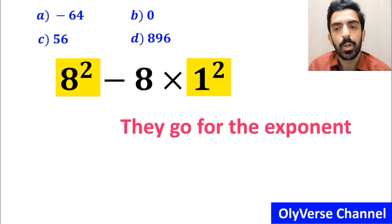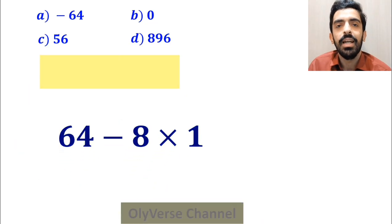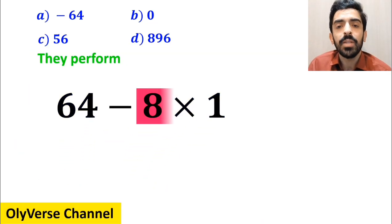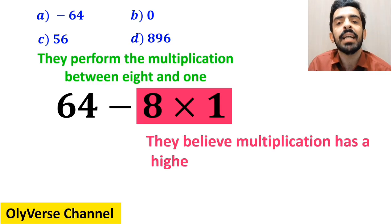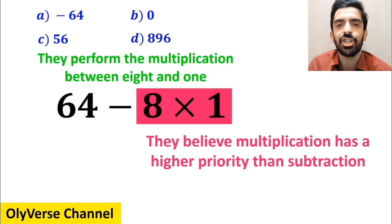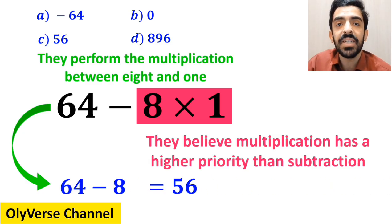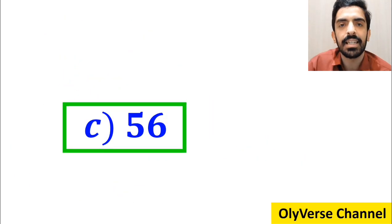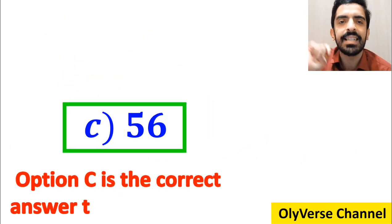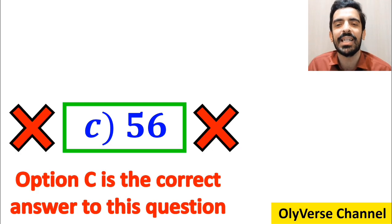Then they go for the exponents and write this expression as 64 minus 8 multiplied by 1. In the final step, they perform the multiplication between 8 and 1 because they believe multiplication has a higher priority than subtraction. This simplifies to 64 minus 8, which gives the answer 56. Without any hesitation, they quickly say that option C is the correct answer. But this answer is also not correct — we're tricked.